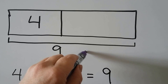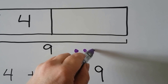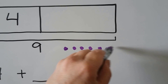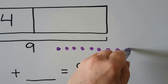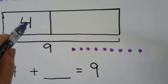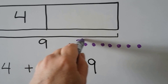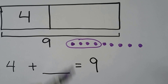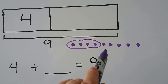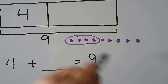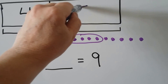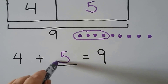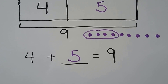Four plus some number equals nine. What can we put here so that it will be equal to nine? We know there were four, so we can circle those. How many must go in the missing part? One, two, three, four, five. Four plus five is equal to nine.